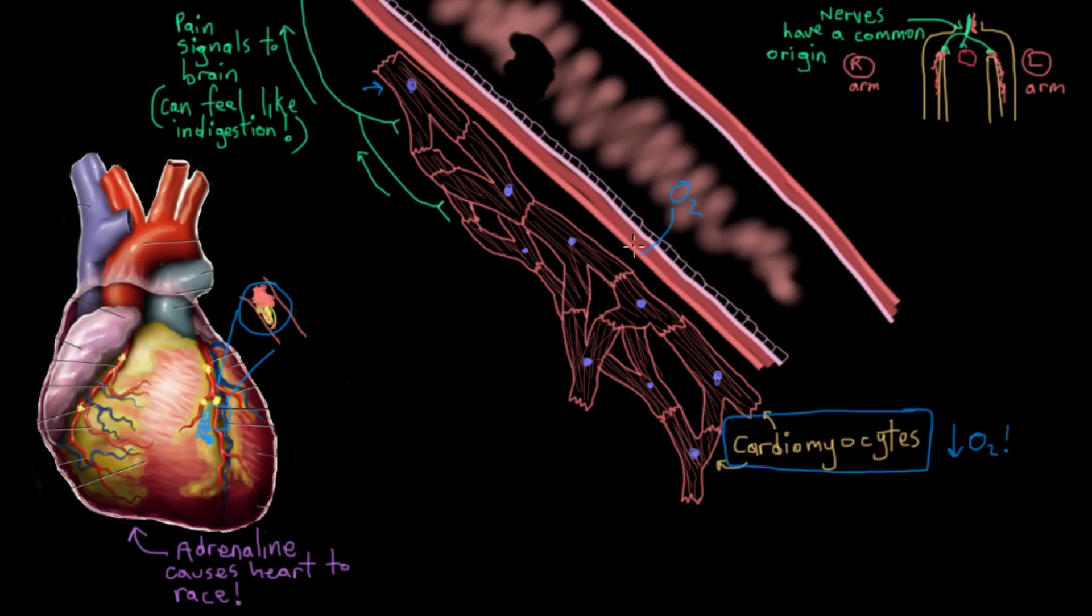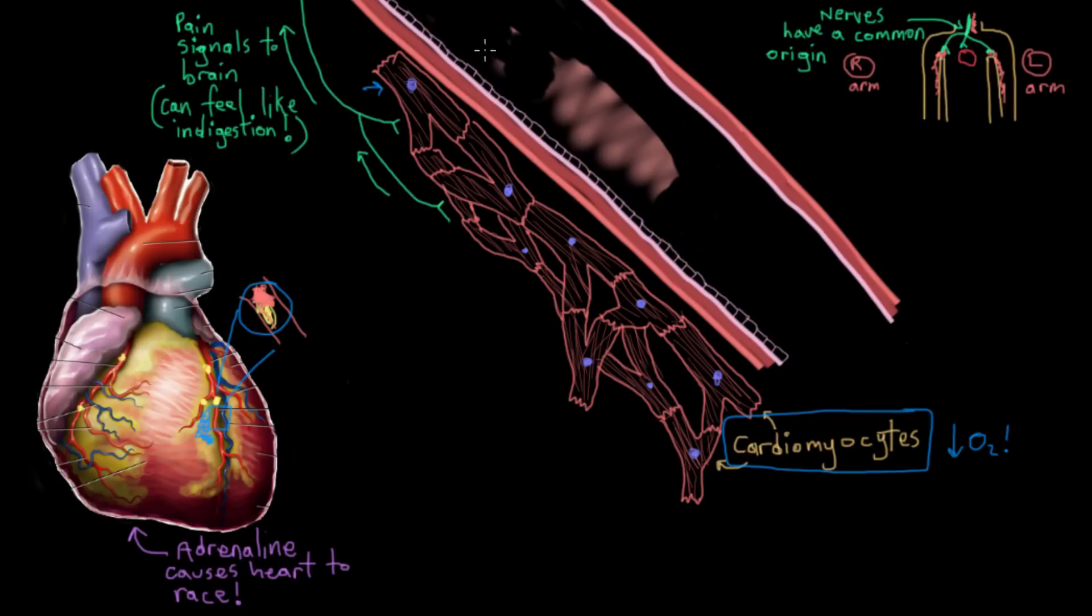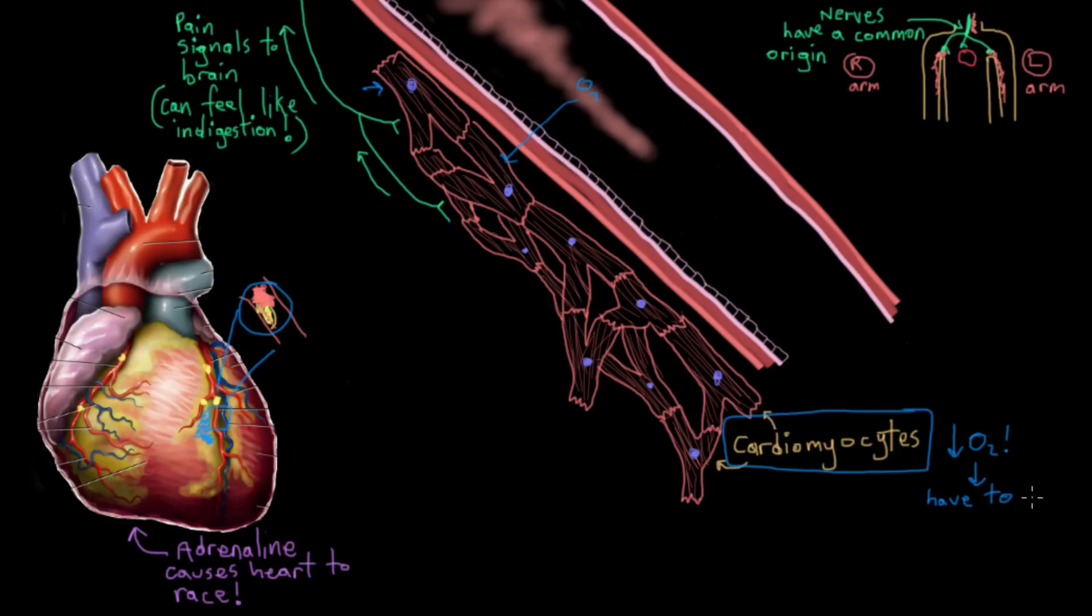So now our cardiomyocytes are in big trouble, because now they're barely getting any blood, so they're barely gonna get any oxygen. Because they're barely getting any oxygen, they necessarily have to slow down their rate of contraction, because having good access to oxygen is really key for cardiomyocytes to produce the energy they need to do all the work they have to do. If they don't have that oxygen, they can't produce all the energy they need, so they have to slow down. They start to slow down, and then they start to stop beating altogether. Because our patch of cardiomyocytes here have stopped beating, the rest of the heart has to compensate. So the rest of the heart starts beating faster to compensate for our dying patch of cardiomyocytes.